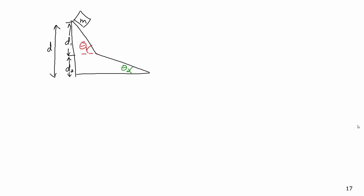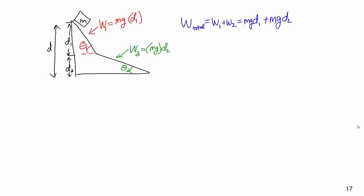If I have something sliding down a ramp where it moves a vertical distance d1 in the first part and a vertical distance d2 in the second part, to find the total work done I can break it up into those two pieces. The work done over the first piece is mg times d1, and the work done over the second piece is mg times d2. So the total work done is mg times d1 plus mg times d2.